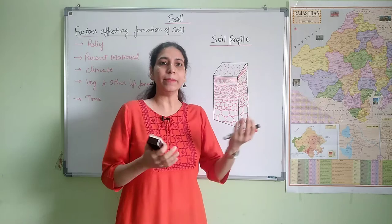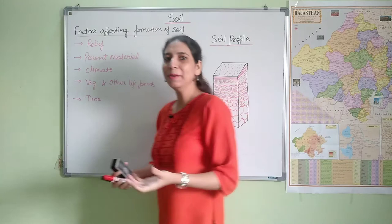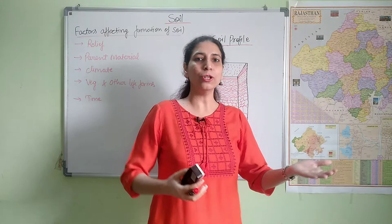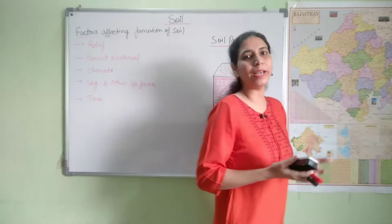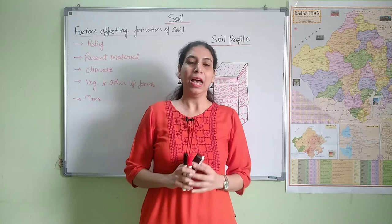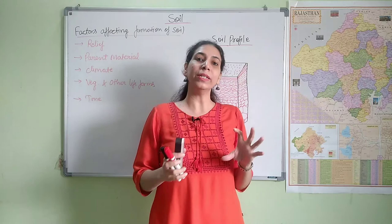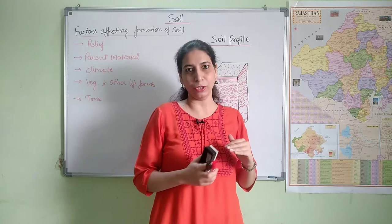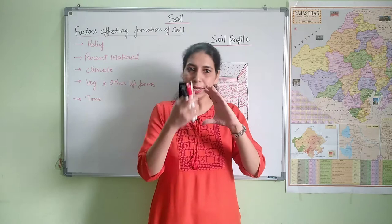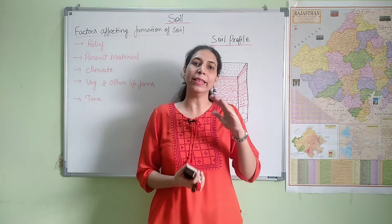If we talk about relief, it determines the accumulation of soil in any place. Relief is the height and slope of a region — the difference between minimum and maximum elevation. Sometimes you have a sea, sometimes plains, sometimes hilly regions. Now relief determines the accumulation of soil. In hills, you will find very immature soils — soils whose profile does not fully develop because certain layers are missing. Whereas in plains, you will find mature soils which have a fully developed profile.